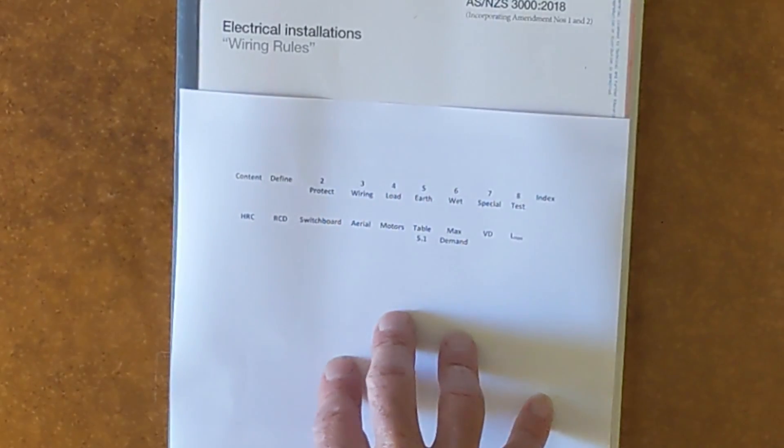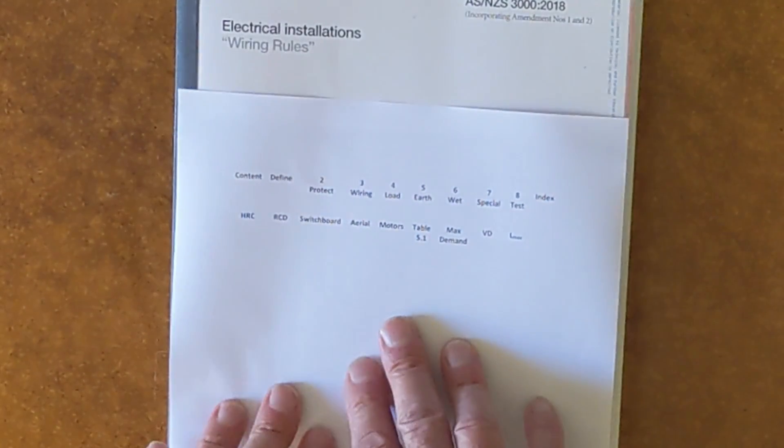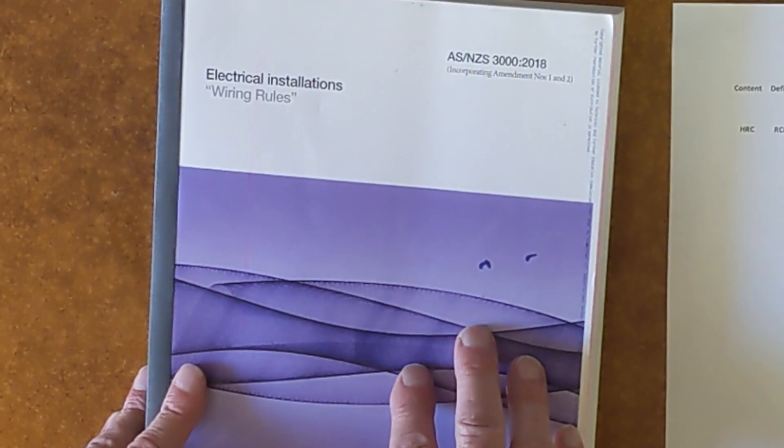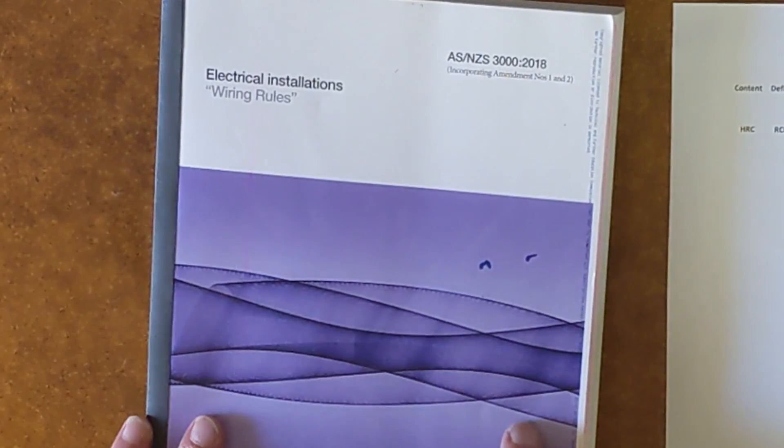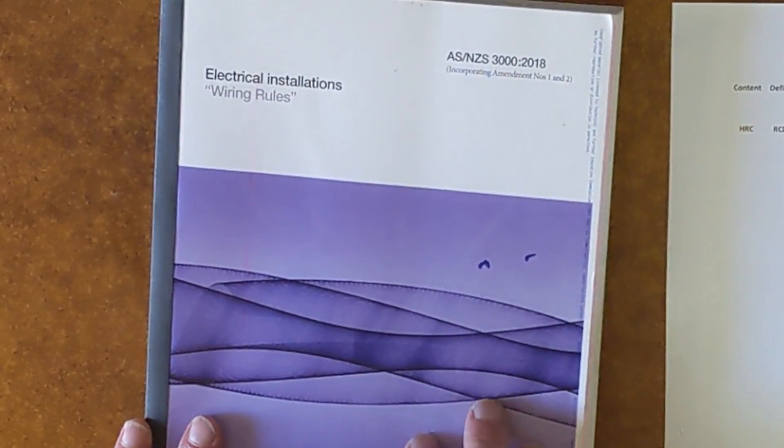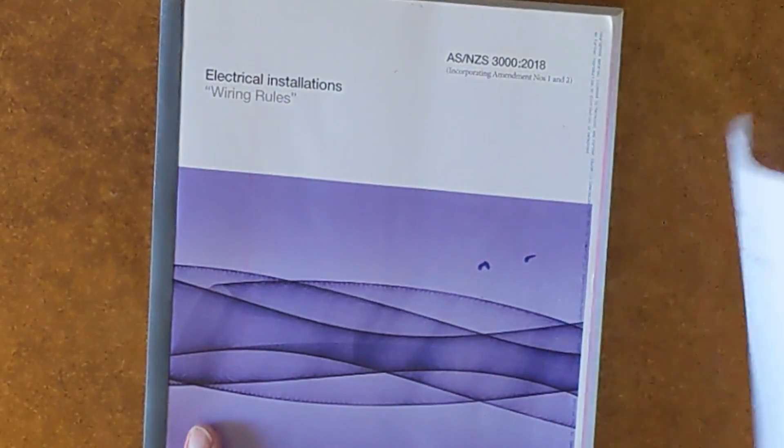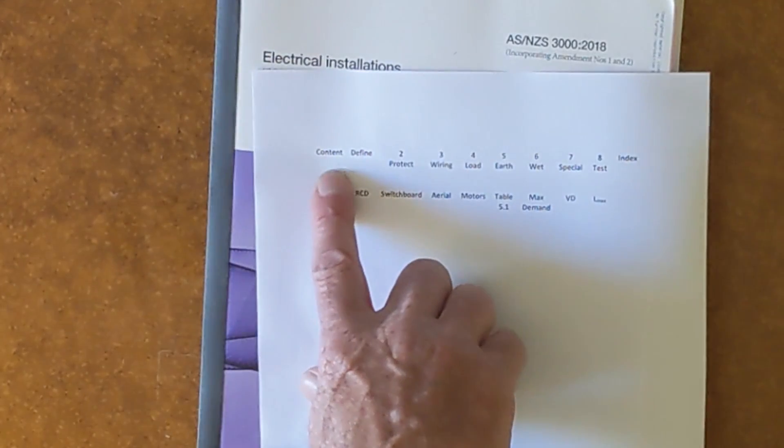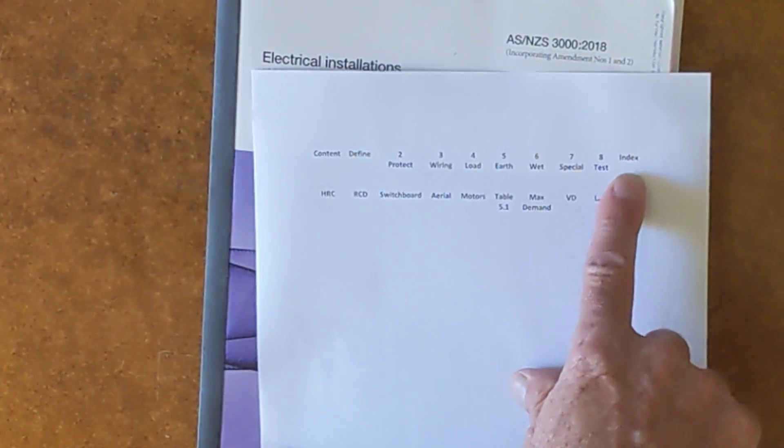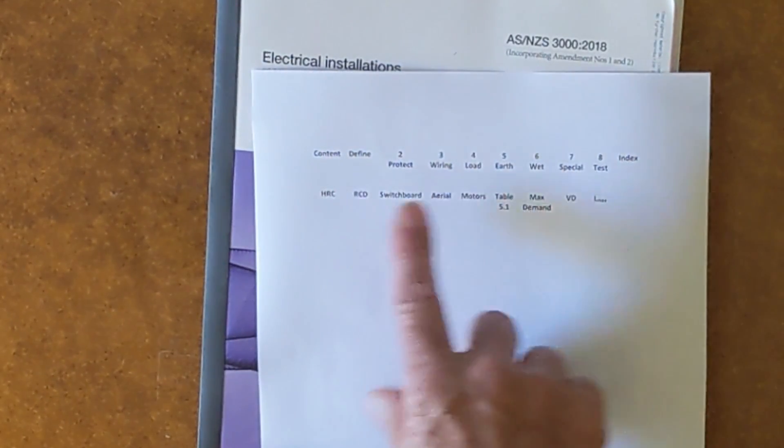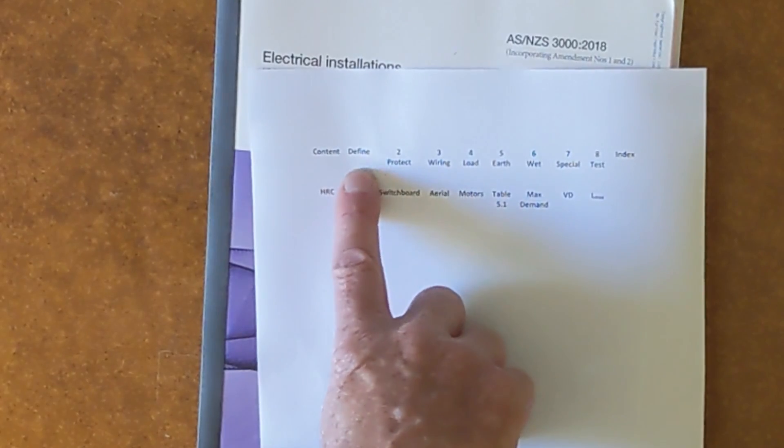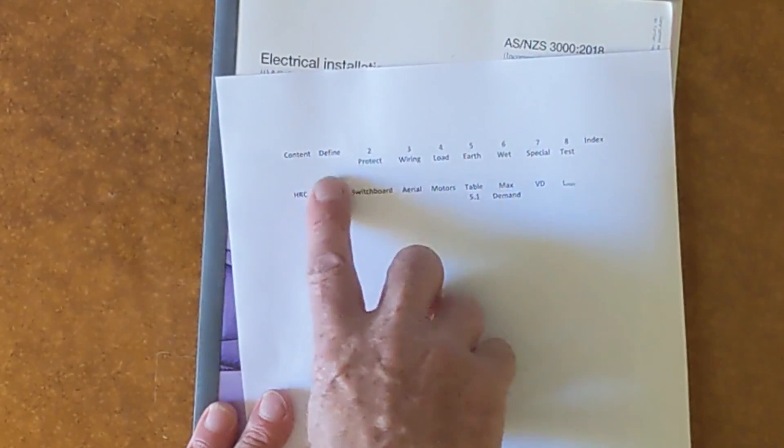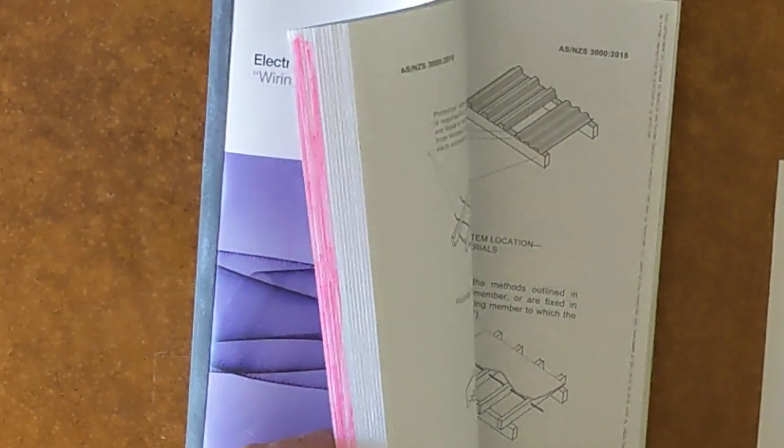What I have here is all the tags I'm going to use in this book. The trick to navigating the wiring rules is not to have everything tagged. The trick to navigating the wiring rules quickly is to be able to break it up into smaller pieces. So I'm going to tag the contents and the index. I'm going to tag the definitions. I know that I'm going to be asked for definitions in a capstone exam.